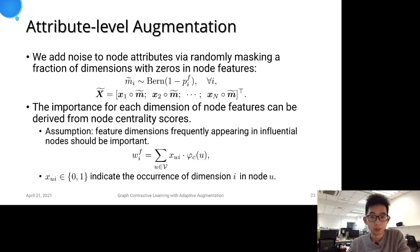At the attribute level, we randomly mask a fraction of dimensions of node attributes with zeros. Assuming important feature dimensions appear in influential nodes, we calculate the frequency of each dimension.